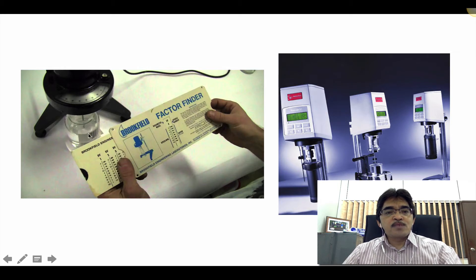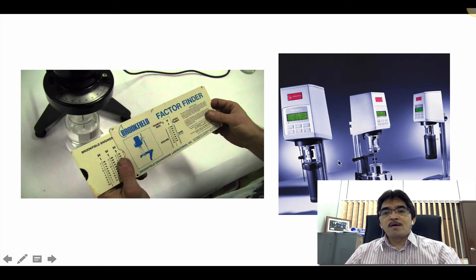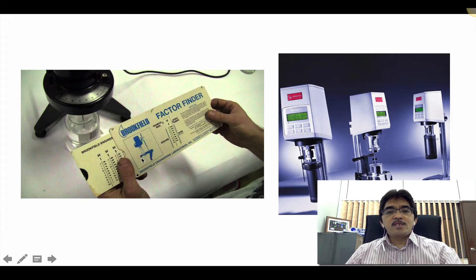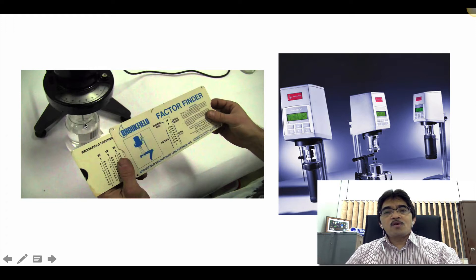We can measure the viscosity and express it in centipoise or pascal second. Or we can use a rheometer to determine the whole flow curve at different shear rates and shear stress, and plot the flow curve easily using a rheometer. Using this kind of instrument, we can choose to measure the viscosity at one constant shear rate, or we can also choose to measure the viscosity over a range of shear rate, for example, from 0 to 1,000 or even 10,000 reciprocal seconds.